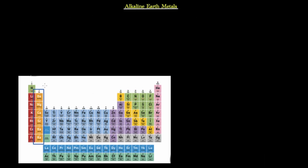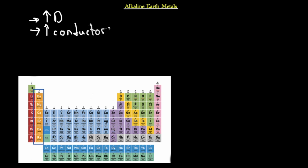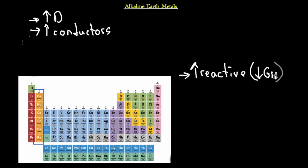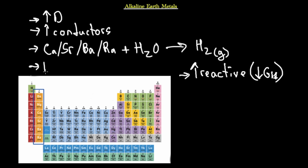Looking at the second group, alkaline earth metals are more dense than the first group. They are also great conductors of heat and electricity — conductivity of heat and electricity is a general property of metals, whereas non-metals are poor conductors, making them insulators. Alkaline earth metals are reactive, but their reactivity is less than group one. Calcium, strontium, barium, and radium can vigorously react with water to form hydrogen gas, while beryllium does not react.